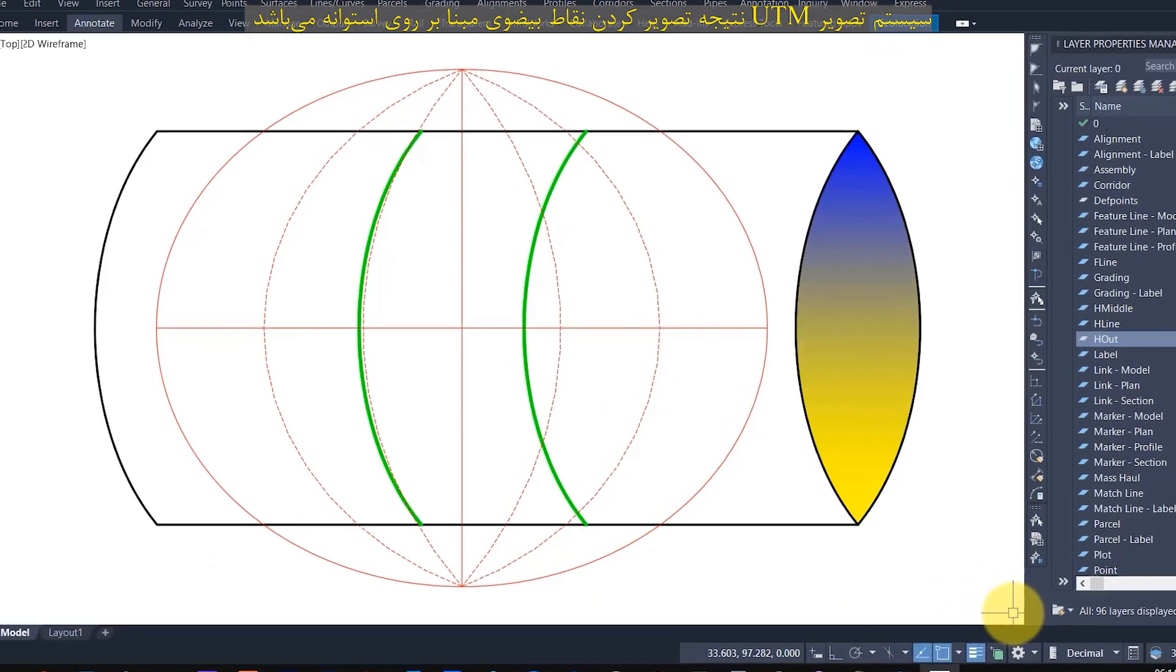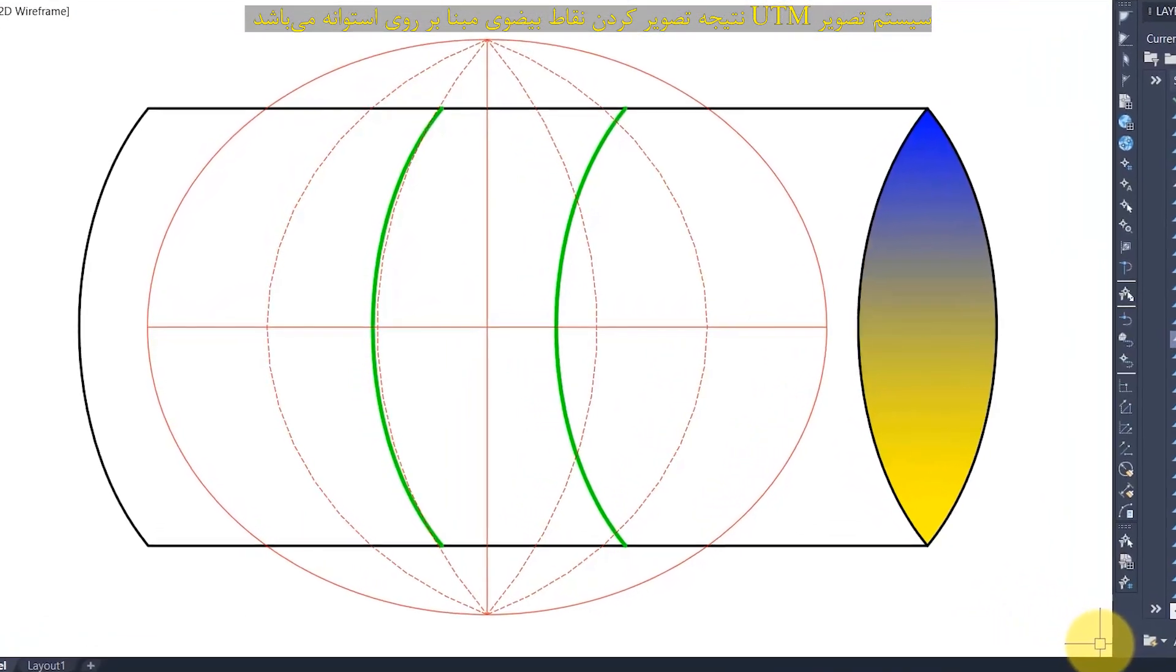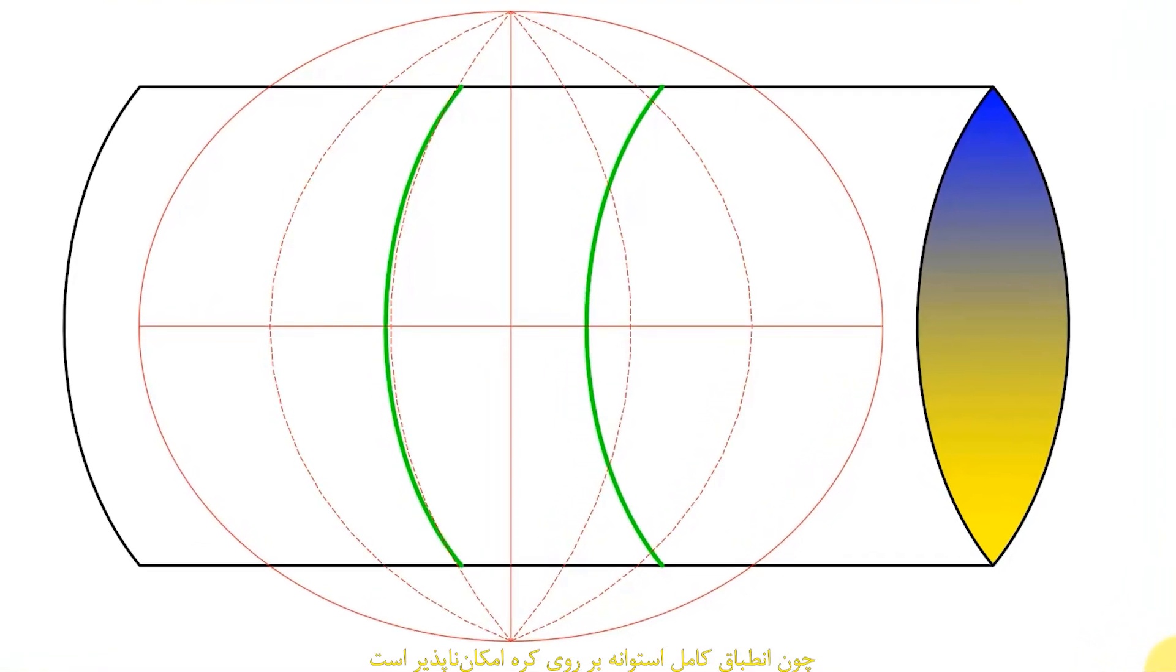The UTM system is the result of imaging the base elliptical points on the cylinder. Because it is not possible for the cylinder to fit perfectly on the ellipse,